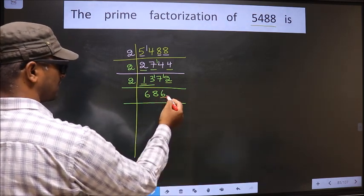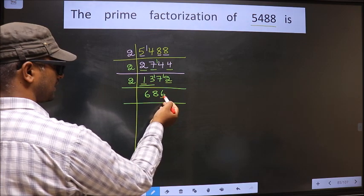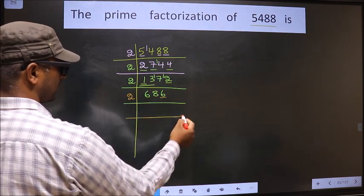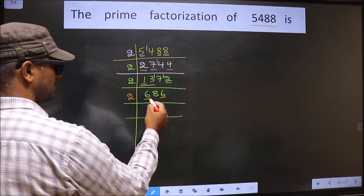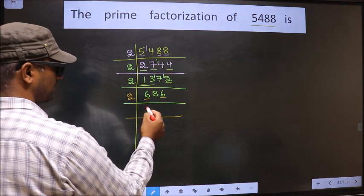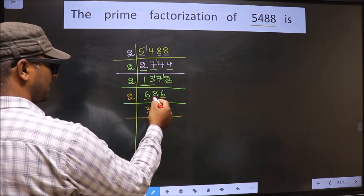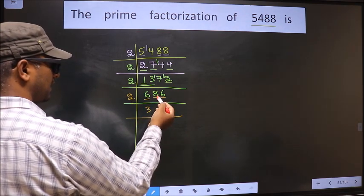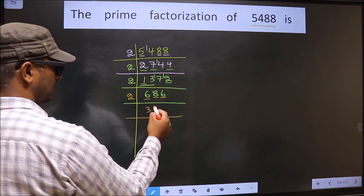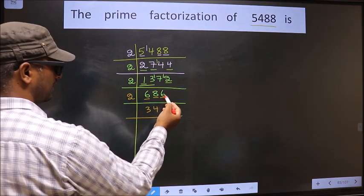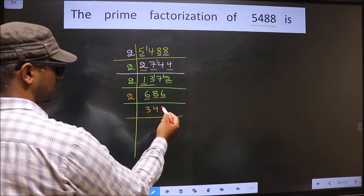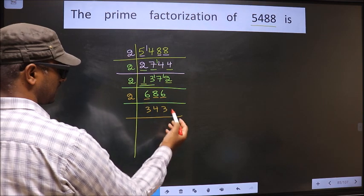Now for this number, the last digit is 6, even, so we take 2 here. The first number is 6; 2×3=6. The other number 8: 2×4=8. The other number 6: 2×3=6. So 686 ÷ 2 = 343.